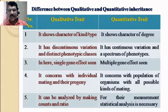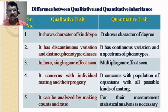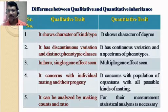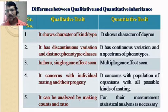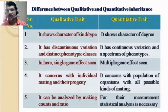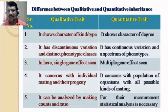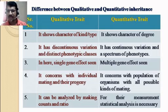The third difference: qualitative traits involve a single gene effect, while quantitative traits show a multiple gene effect. The fourth difference: qualitative inheritance concerns individual matings and their progeny, considering only an individual or two. In contrast, quantitative inheritance concerns populations of organisms with all possible kinds of mating. The whole population of that community is taken into consideration, where different types of organisms mate randomly and produce different types of variation.